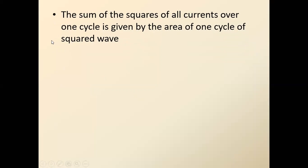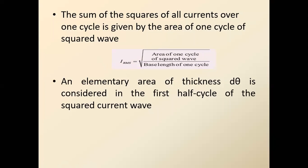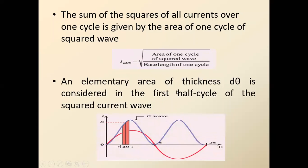The sum of squares of all the currents over one cycle is given by the area of one cycle of the square wave. So Irms equals the square root of the area of one cycle of the square wave divided by the base length of one cycle. We take the full cycle of the square wave. To calculate this, we consider a small element of elementary thickness dθ in the square wave.